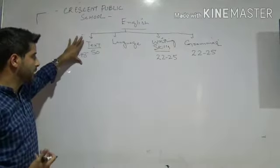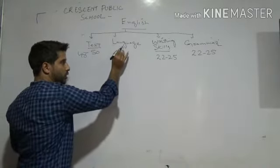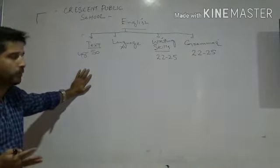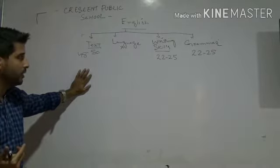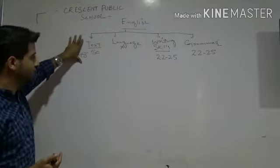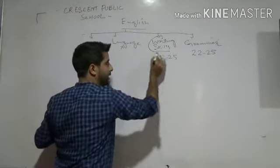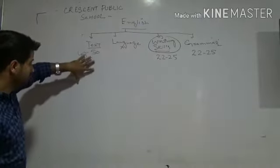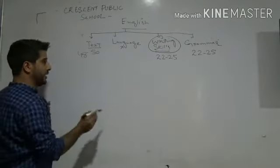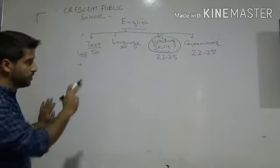The first part is the textual part, then the language part — but in the language part you will not get any marks. When you open your textbook, on the second or third page you will find phonetic sounds like b, k, g sounds, but it doesn't carry any marks. What carries marks is the textual part, writing skills part, and grammar part. Today I am going to take the writing skills part, which contains 22 to 25 marks, and I am going to finish this part first.